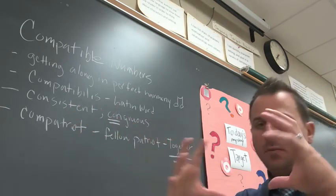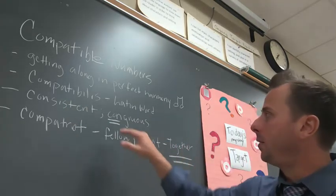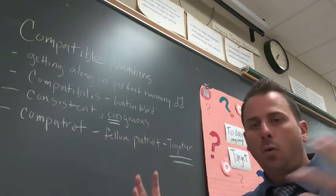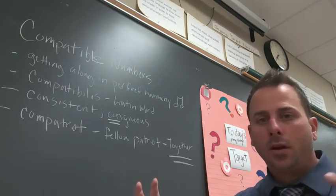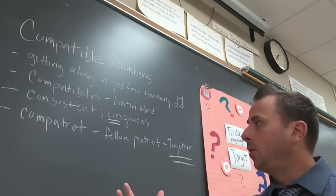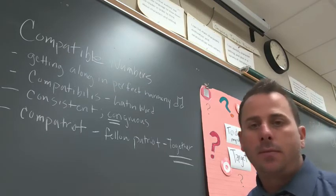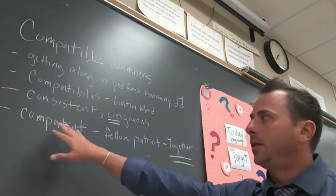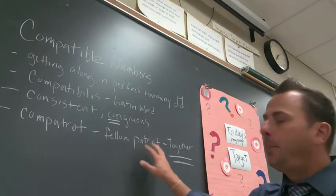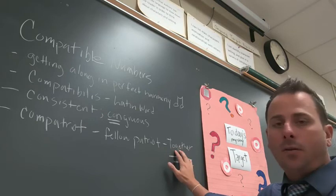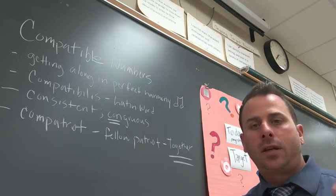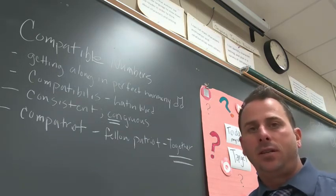Compatibilis is the Latin word and it means consistent or congruous. When you look at this word, 'co' means together and 'con' means with. So these numbers are working with each other, coordinating with each other to get a simple solution to a math problem. You're studying the American Revolution right now. Let's think of the word compatriot—a compatriot means a fellow patriot, they're working together for a common goal for independence.